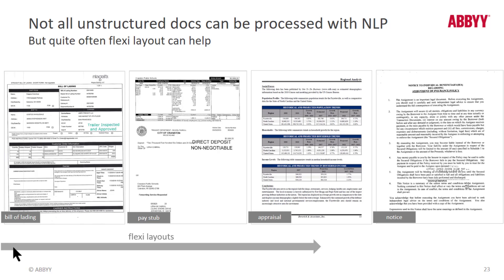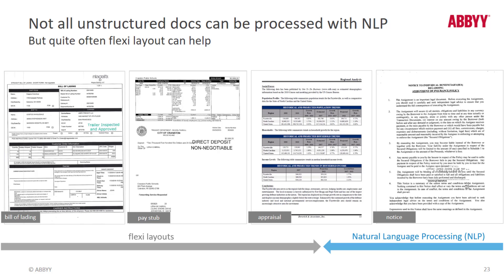These documents contain table data and look a lot more like the classic semi-structured document you're familiar with, and you know approaches to capturing data from these forms using FlexiLayout Studio. The appraisal could benefit from using FlexiLayout Studio to extract the table data, and also from using NLP technology to gather data from those paragraphs. And this last document, the notice, is a perfect example of a document that's set up and laid out well for using NLP technology.